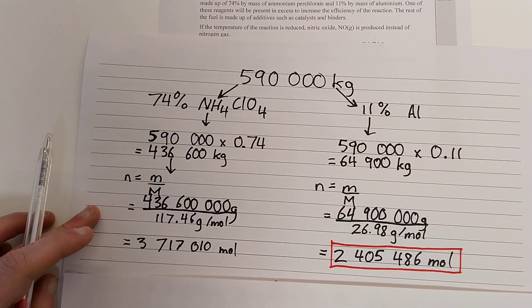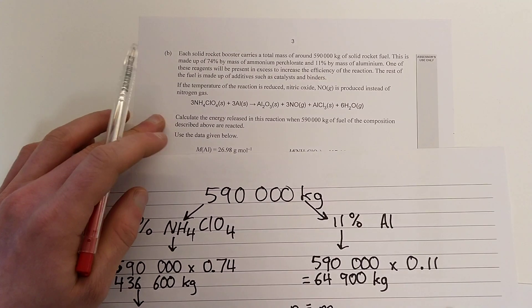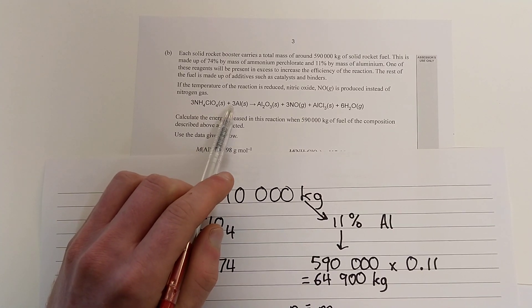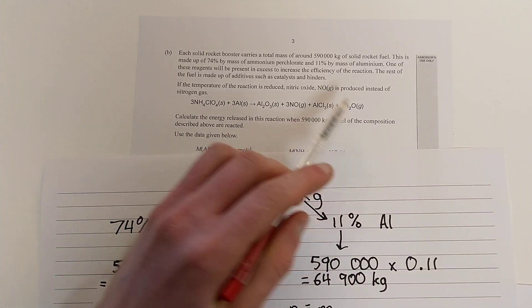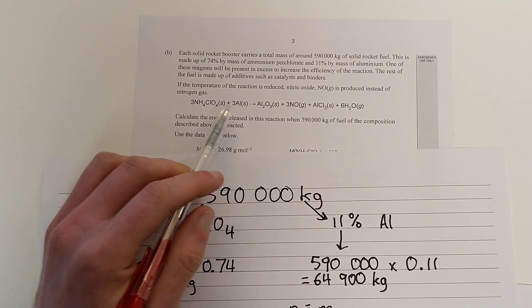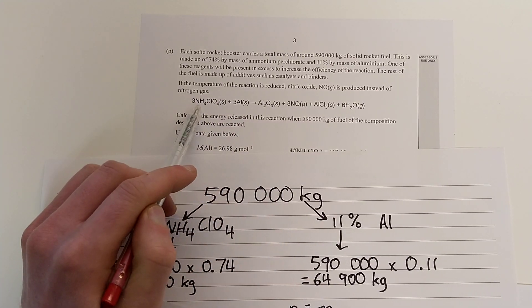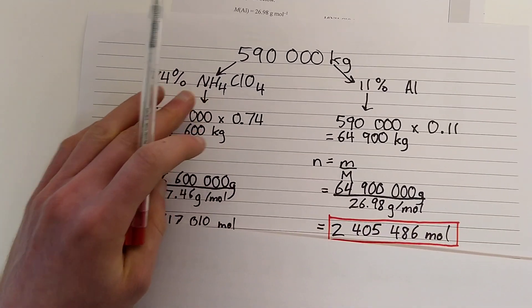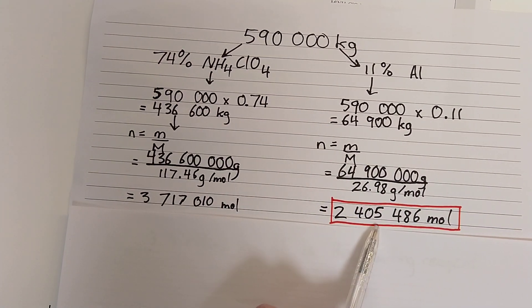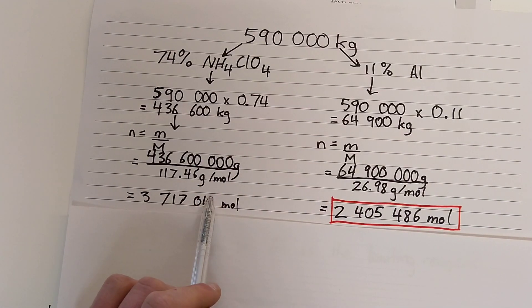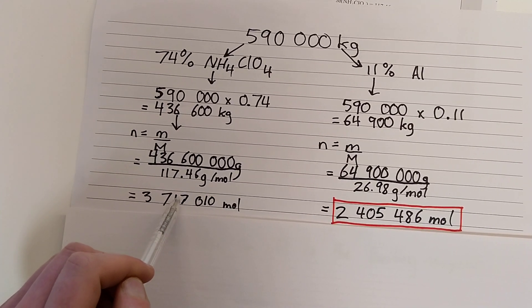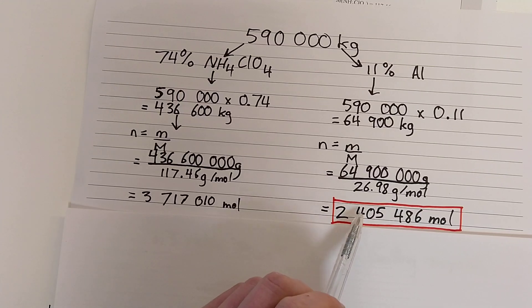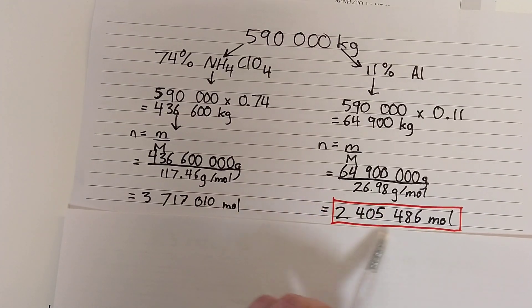So which one is the limiting reagent? In our equation, we see that it's a 3-to-3 ratio — for every 3 moles of ammonium perchlorate, we need 3 moles of aluminium to react to completion. We can simplify that as a 1-to-1 ratio. So if we have 2.4 million moles of aluminium, we need 2.4 million moles of ammonium perchlorate to react with it. We do not have 3.7 million moles of aluminium, so aluminium is our limiting reagent. It determines how far this reaction goes because it will be the first reactant we run out of.